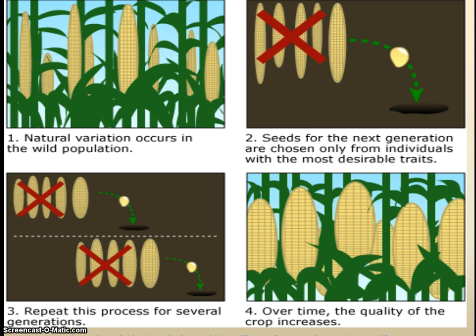People realized that if you eat the ears of corn that have the less desirable traits and keep the ones with desirable traits — here we're focused on the size of the ears — to plant and make the next generation, as shown in picture two and picture three, if that same phenotype was selected for over and over again throughout many generations, as in picture four, all of your crop is going to have that phenotype.